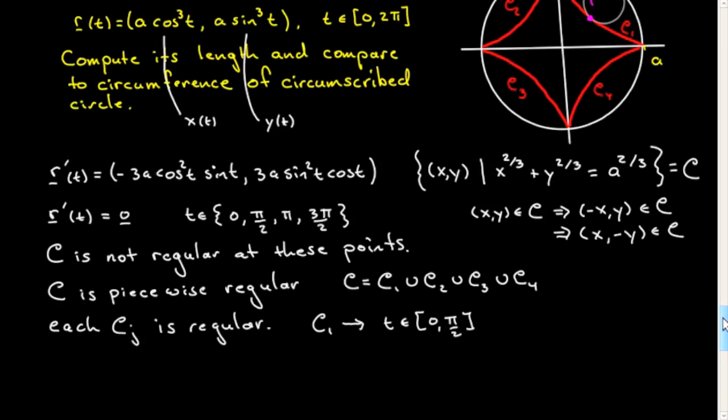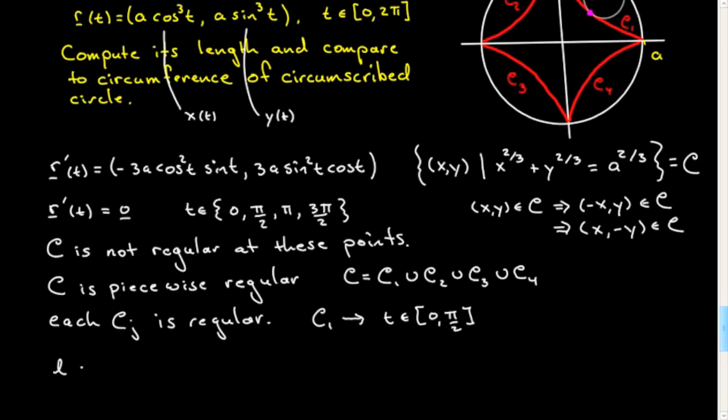Now, what we want is the length of the curve, and because it's piecewise regular, you can compute it. The length of the curve is equal to the sum of the lengths L(C1) + L(C2) + L(C3) + L(C4), but by symmetry, you can either say it's obvious from the figure, that will simply be equal to four times the length of C1. So I will only compute the length of C1 and then just multiply by four to get my answer.